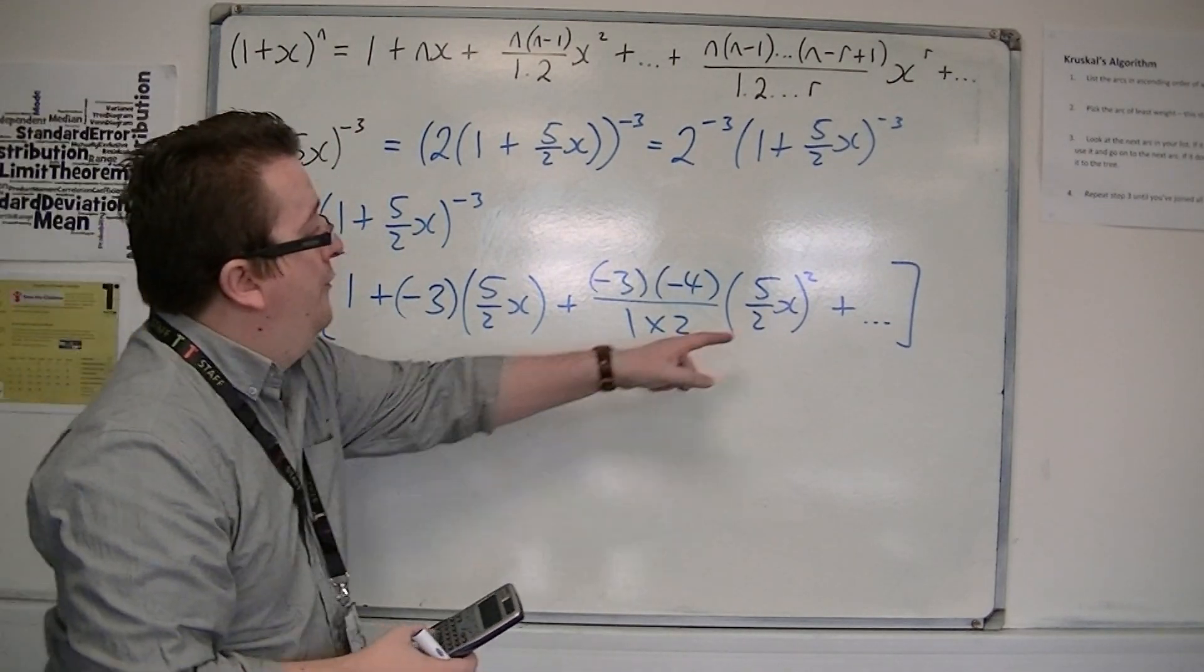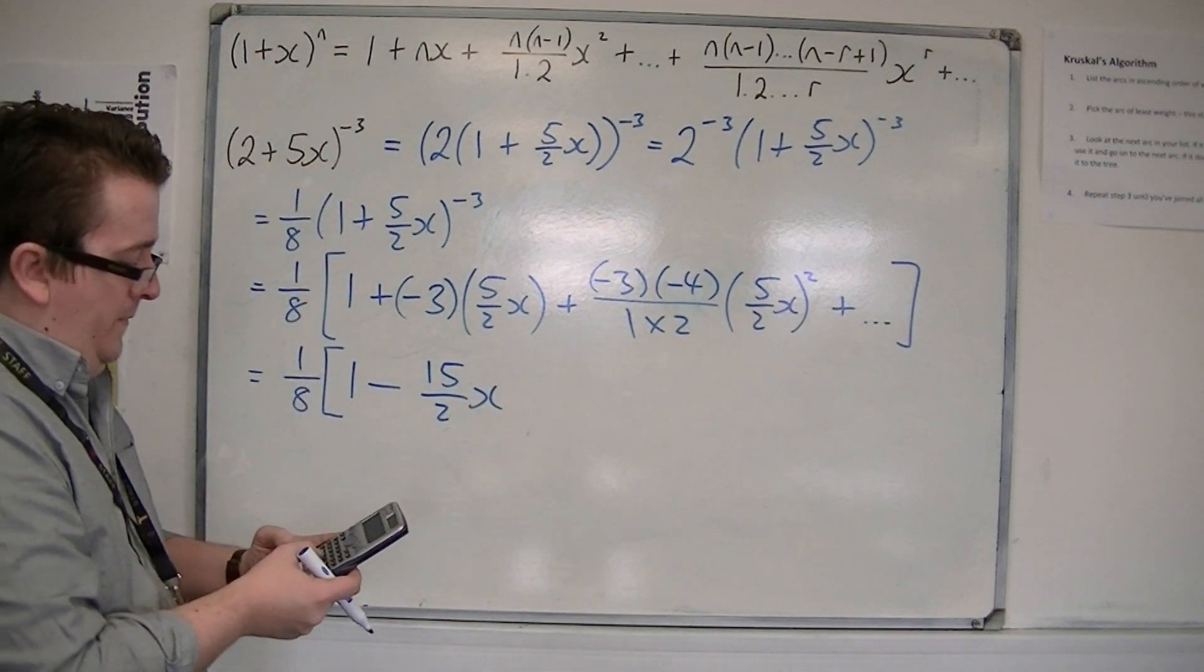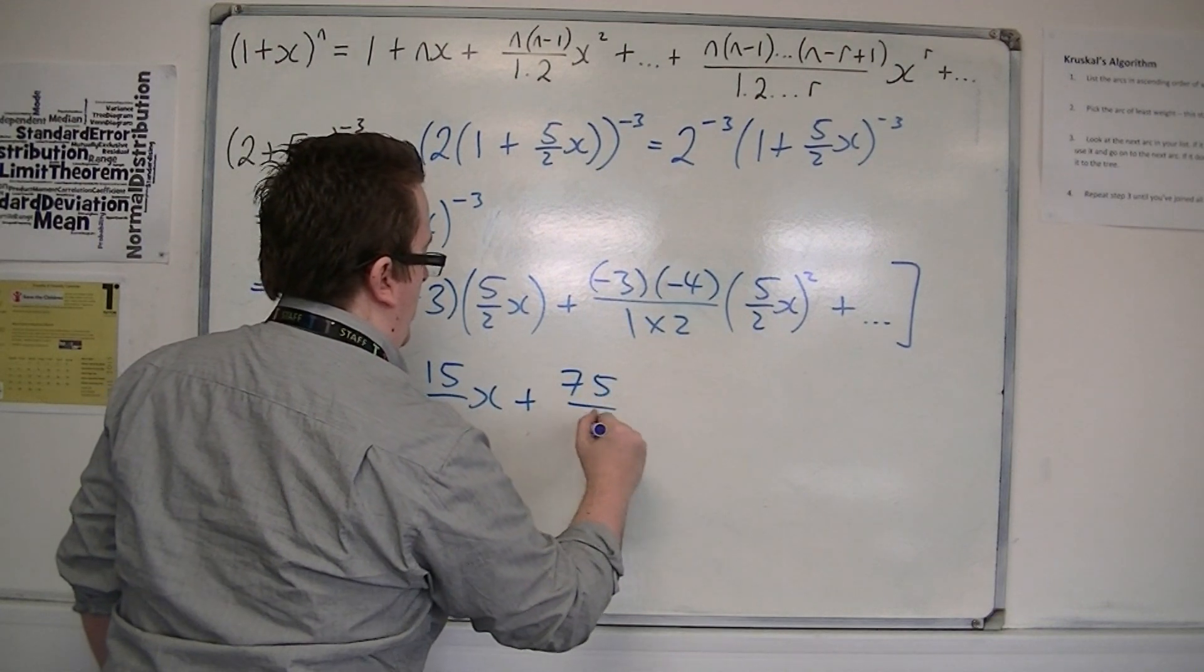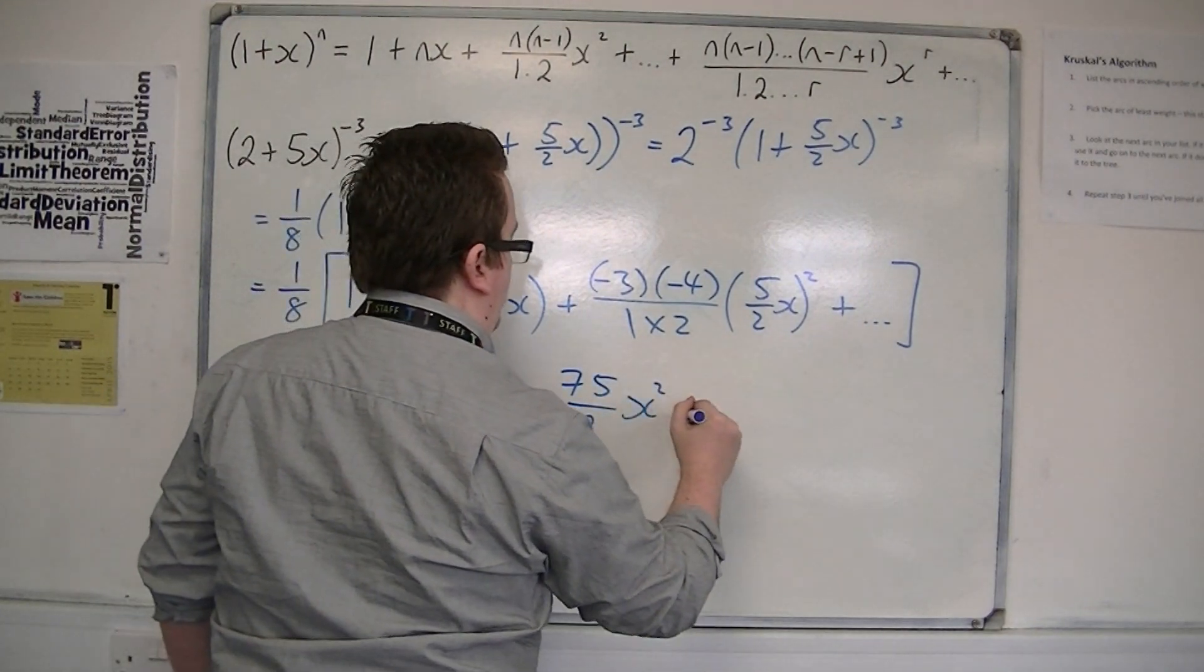So that's 6 lots of (5/2) squared, which is 75/2 x squared, plus other terms.